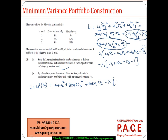I can very well write the return term as 4W1 plus 6W2 plus 8W3, and I am expecting a return of 5. Similarly, minus lambda 2 times W1 plus W2 plus W3 minus 1. So this becomes my updated Lagrangian function.